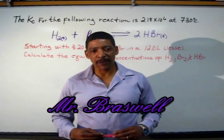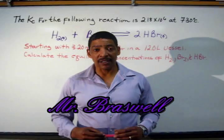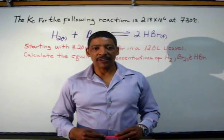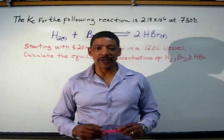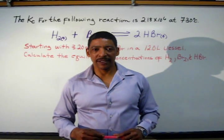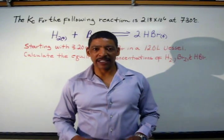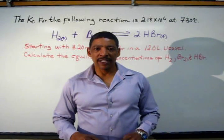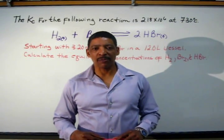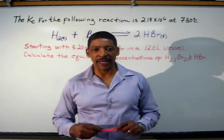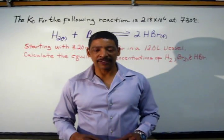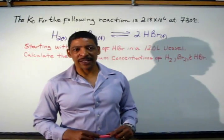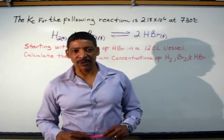For a reversible reaction occurring in a closed system, at some point the forward reaction rate will equal the reverse reaction rate. At this point, the concentrations of both the products and reactants will remain constant. This condition is known as a chemical equilibrium.